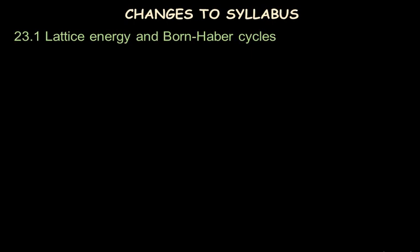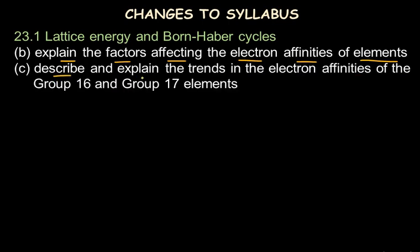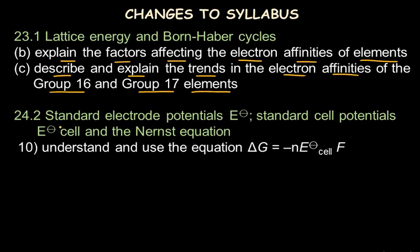The first change is in the topic Lattice Energy and Born-Haber Cycle, where a small topic has been added: explain the factors affecting the electron affinity of the elements, which was not in the earlier syllabus. Also added is: describe and explain the trends in the electron affinity of Group 16 and Group 17 elements. These two subtopics are added to this chapter; all other topics remain as before.